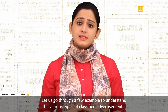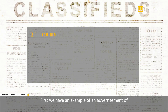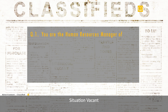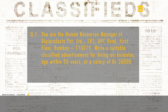Let us go through a few examples to understand the various types of classified advertisements. First, we have an example of an advertisement for situation vacant. You are the Human Resources Manager of DG Products Private Limited, 182 ABC Road, 1st Floor, Bombay 110019. Write a suitable classified advertisement for hiring an animator, age within 35 years, at a salary of Rs. 30,000 per month. You are looking for skills in at least Adobe After Effects.